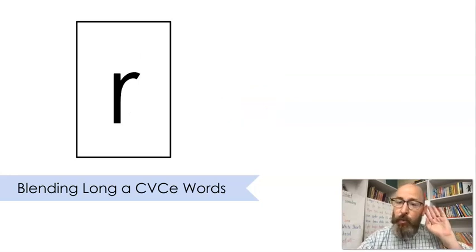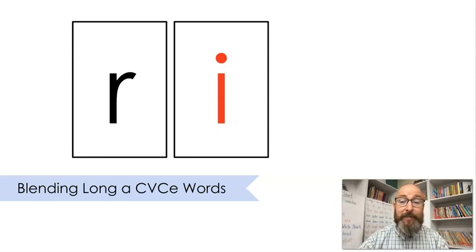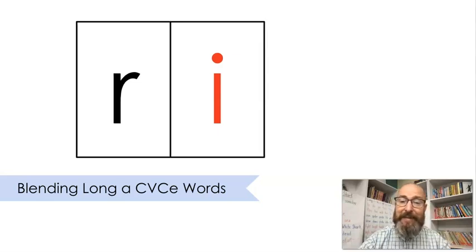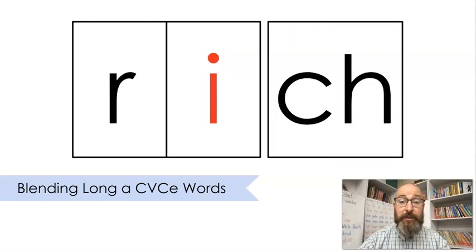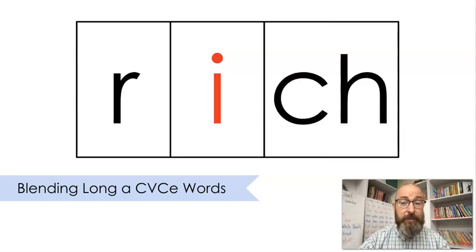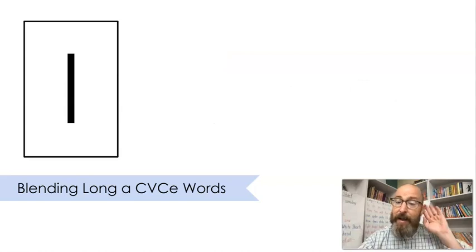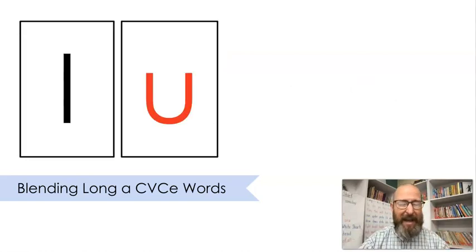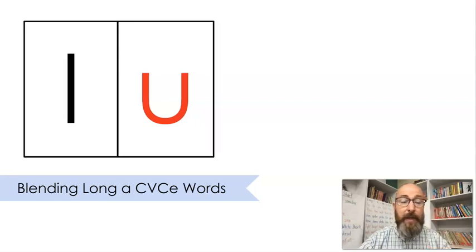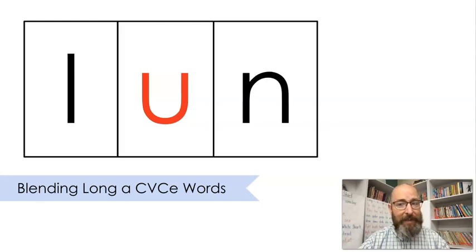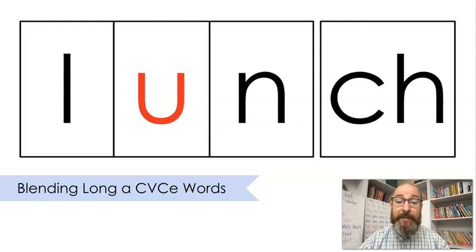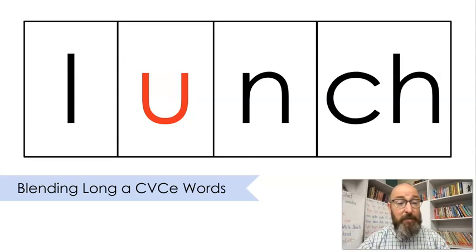Sound — R — sound — I — put that together: rich. Someone who's rich may have a lot of money, or something may taste rich if it's got lots of flavor. Sound — L — sound — uh — put that together: L, N, ch — lunch. We have lunch in the middle of the day.